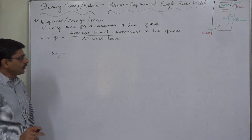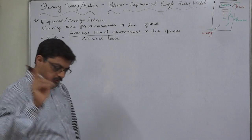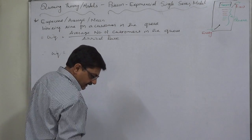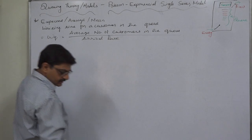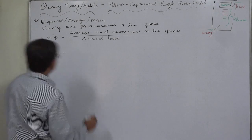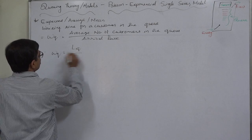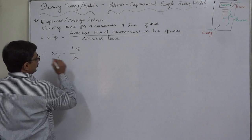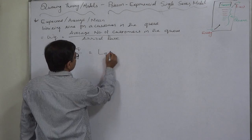What was the notation for average number of customers in the queue? We had already discussed that. The notation we used was LQ. But this will be easier.